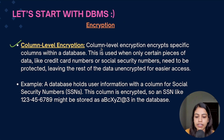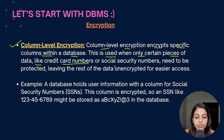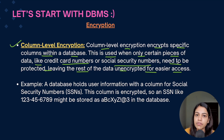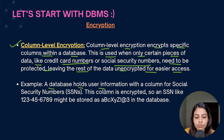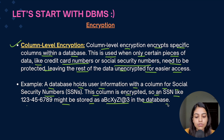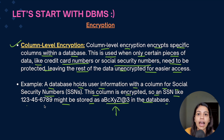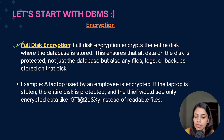Column level encryption encrypts specific columns within the database. This is used when only certain pieces of data — like credit card numbers or social security numbers (SSN) — need to be protected, leaving the rest of the data unencrypted for easier access. For example, an SSN like '123-45-6789' might be stored in an encrypted format in the database, requiring a decryption key to read. This is used for columns containing highly valuable or sensitive data.